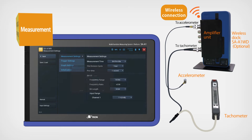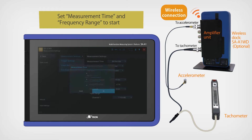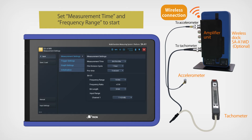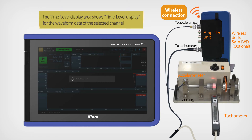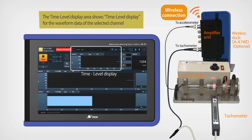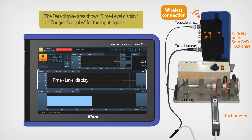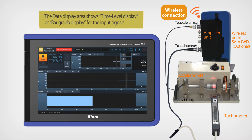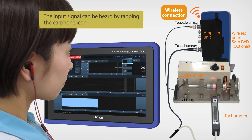Set the measurement time and frequency range to start. The time level display area shows the time level display for the waveform data of the selected channel. The data display area shows time level display or bar graph display for the input signals. The input signal can be heard by tapping the earphone icon.